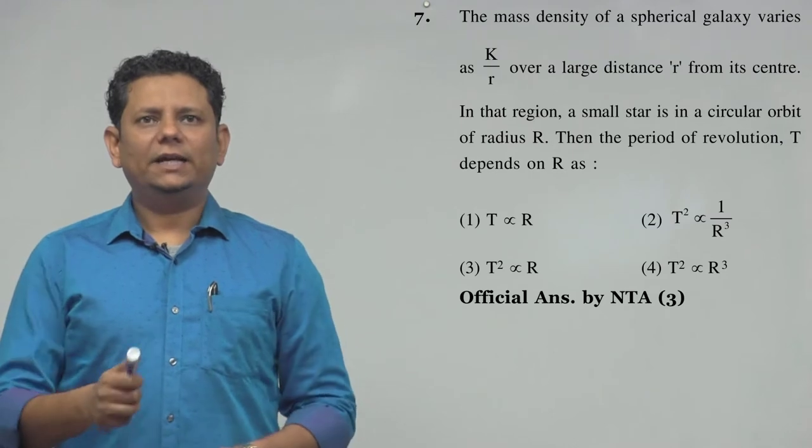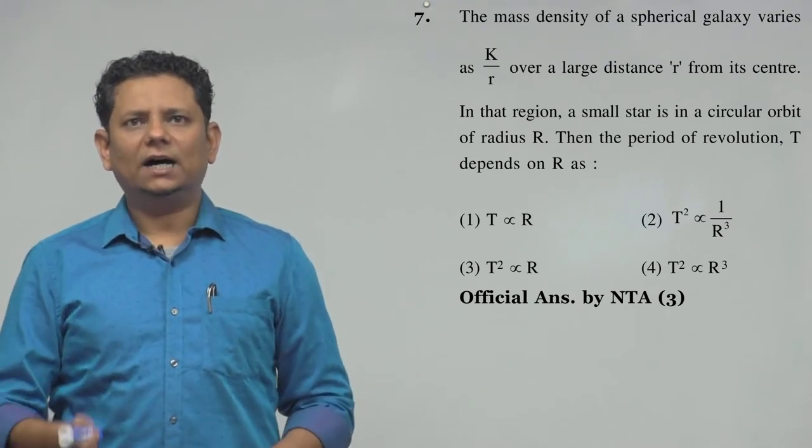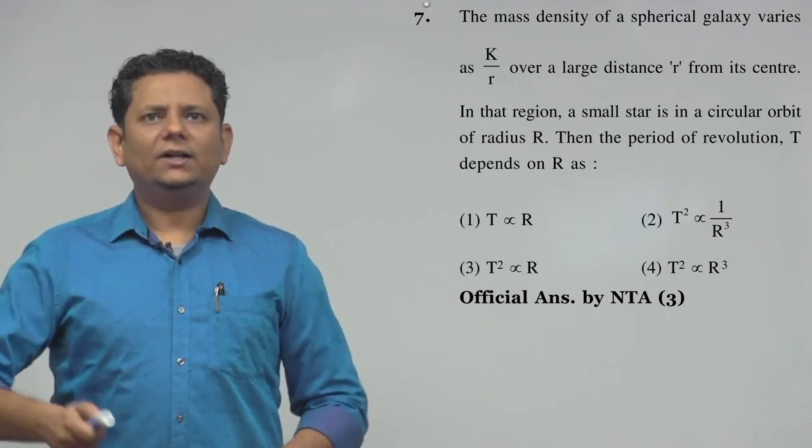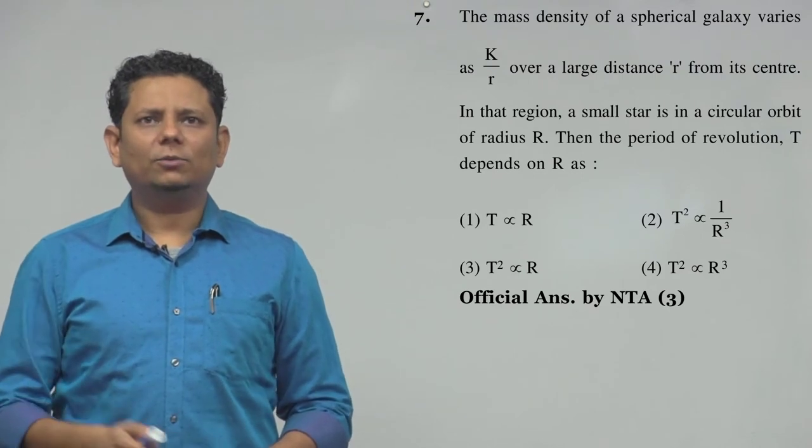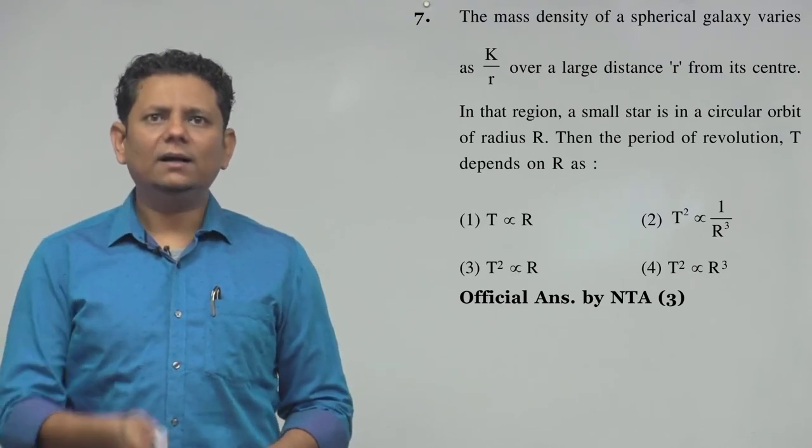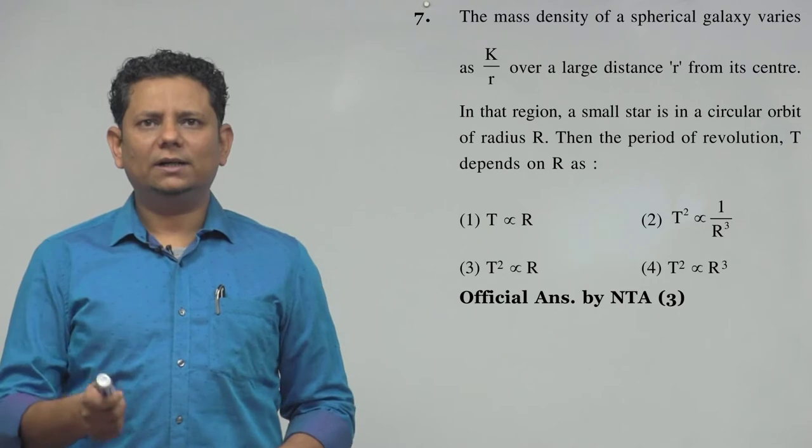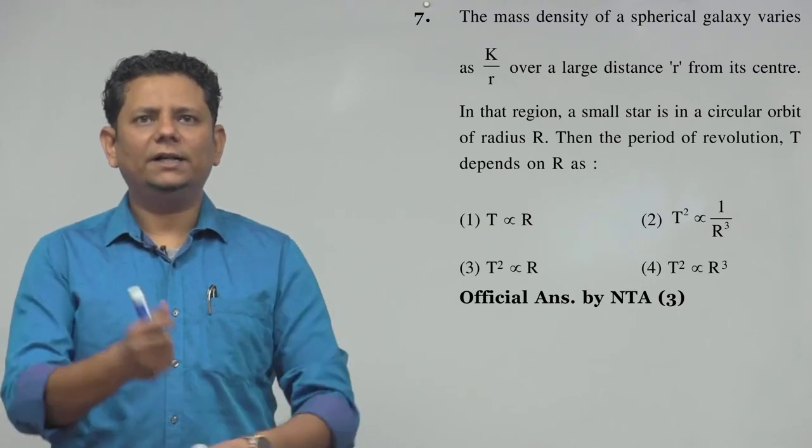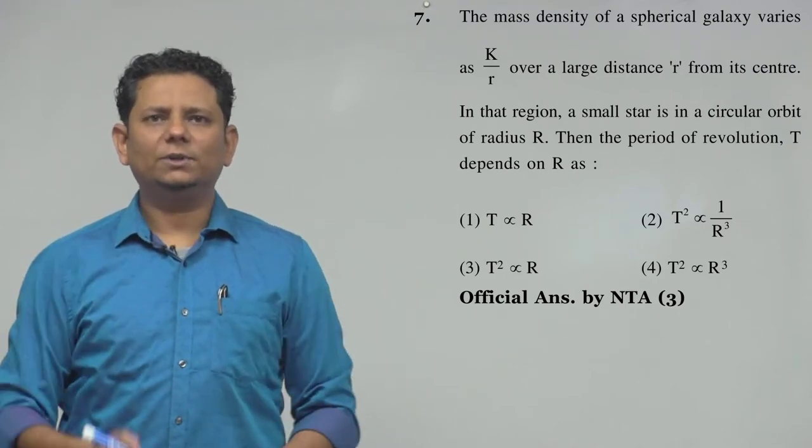Next question. The mass density of a spherical galaxy varies as k by r over a large distance r from its center. In that region, a small star is in circular orbit of radius capital R. Then the period of revolution, time period T, depends on R as - the relationship we need to find.